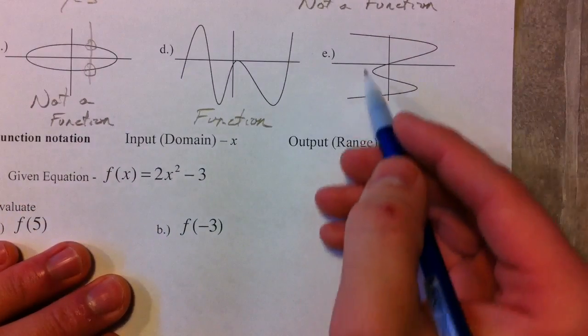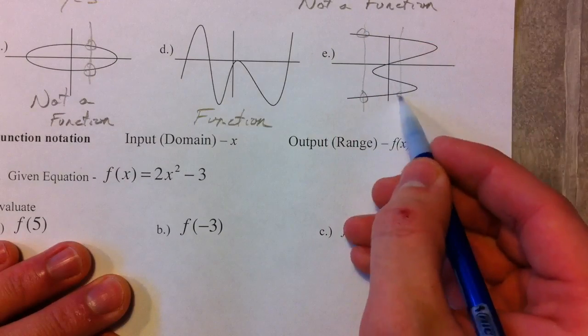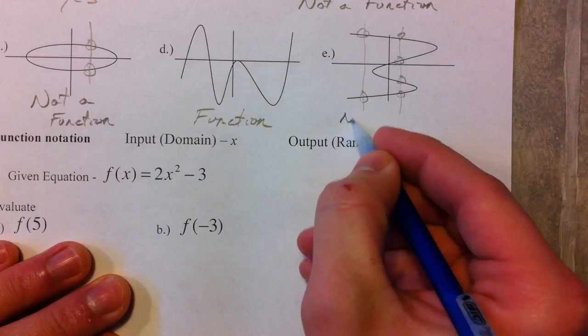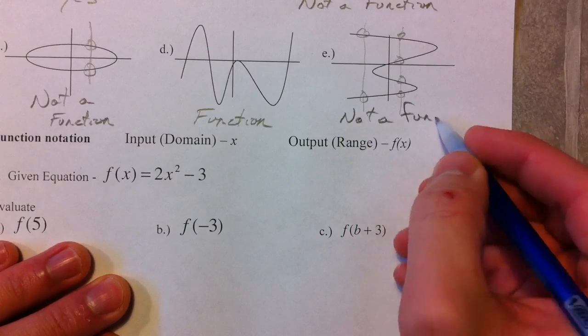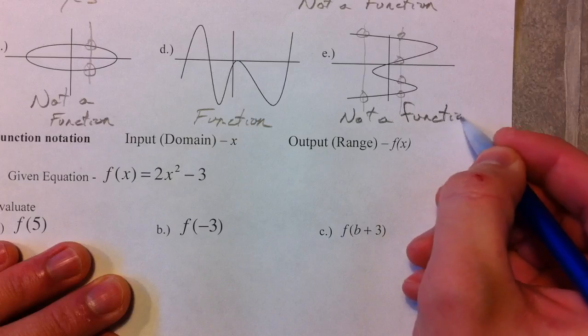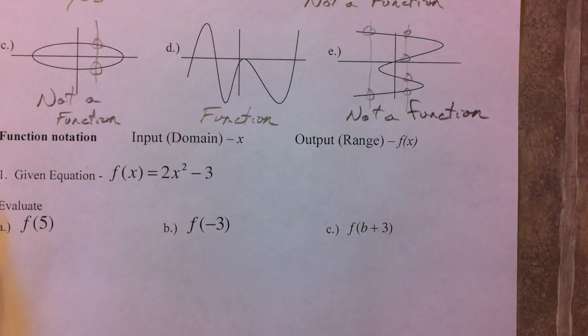And on this next one, vertical line test here, it crosses twice. Vertical line test here, it crosses four times. This is definitely not a function. Because for a number of the X's, there are two different Y's, three different, or four different Y's that it could be.